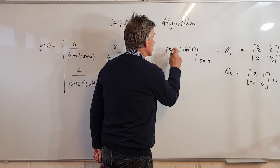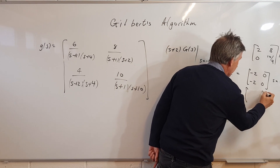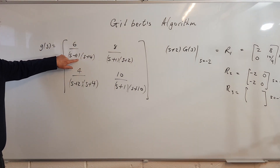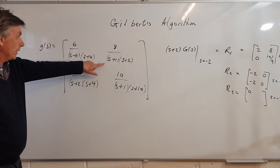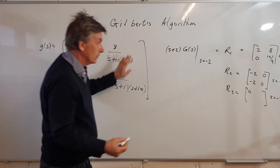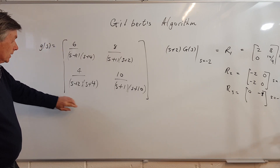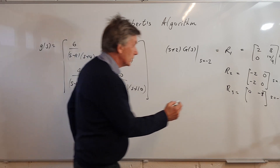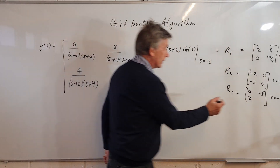We can now work out (s+2) times G(s), which gives R3, evaluated at s = -2. There are no (s+2) factors in the first entry, so it's a 0. We do have one in the next entry: -2 and 1 is -1; -1 into 8 goes -8. Then -2 and 4 is 2; 2 into 4 goes 2. And finally there's no (s+2) in the last term, so that's a 0.